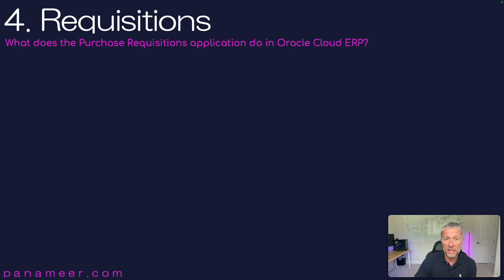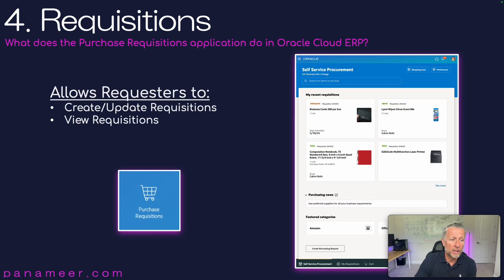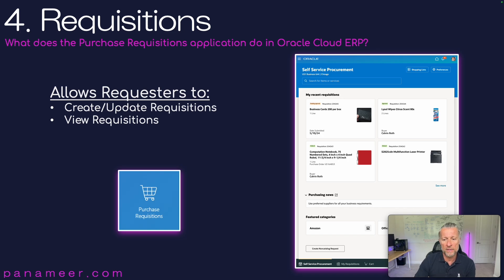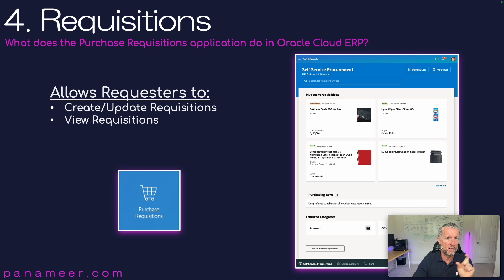Slide four: what does the Purchase Requisitions application do in Oracle Cloud ERP? This allows requesters to create and update requisitions as well as view requisitions. You can see the 2024/25 update for responsive self-service — this is the new look and feel. There's also another video that talks about the difference between non-responsive and responsive.